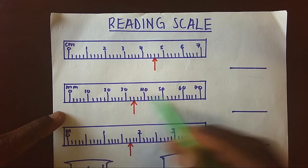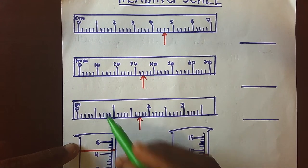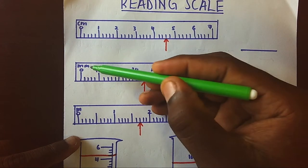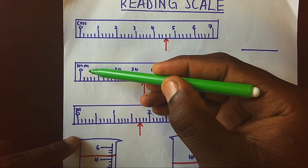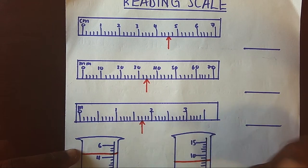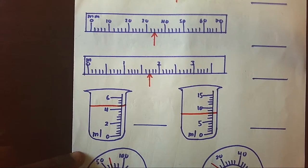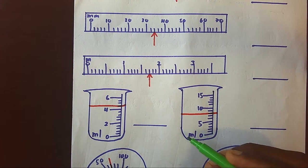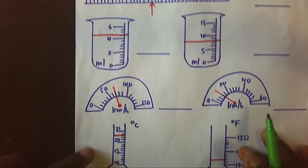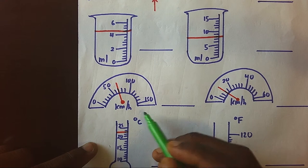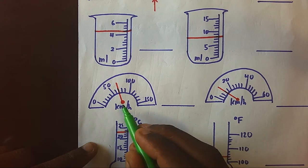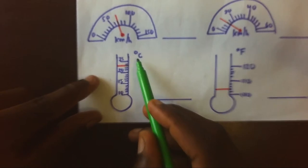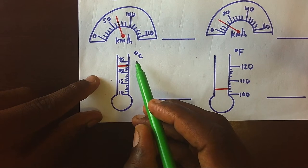We could have a ruler, a tape measure, so we could have units in centimeters, millimeters, meters, and so on. However, we can also have a beaker where it could be in milliliters, and we can be measuring milliliters. We've got a speedometer which is usually in kilometers per hour, and then we can also measure the centigrade and the Fahrenheit.